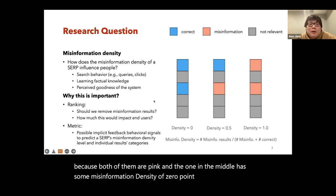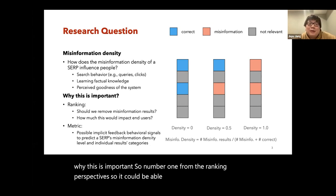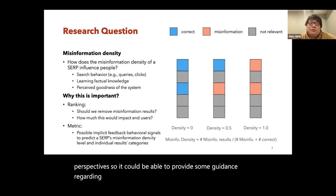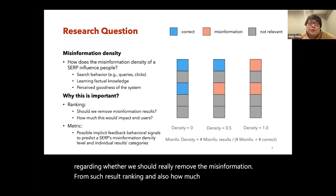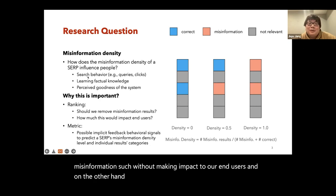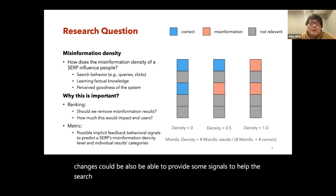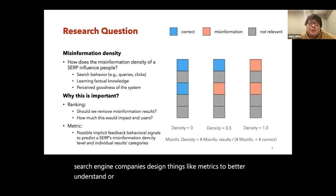The ranking on the rightmost side has a misinformation density of one because both results are pink, and the one in the middle has a misinformation density of 0.5. This matters for two reasons: from a ranking perspective, it can provide guidance on whether we should remove misinformation results and how much impact that removal would have on end users. It could also help search engine companies design metrics to better identify the misinformation density level.